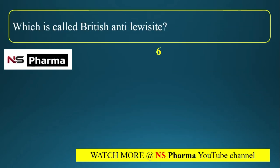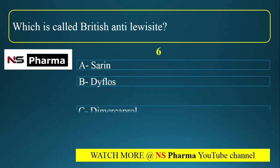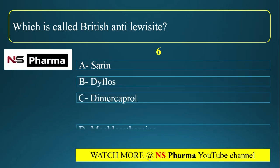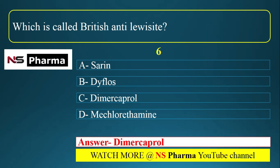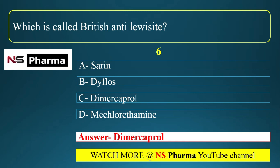Question 6: Which is called British Anti-Lewisite? Options: (a) serine, (b) difluorase, (c) dimercaprol, (d) mechlorethamine. The correct answer is option C: dimercaprol.